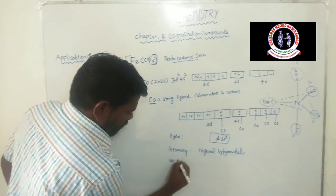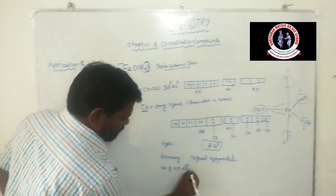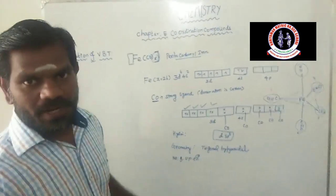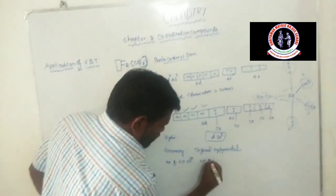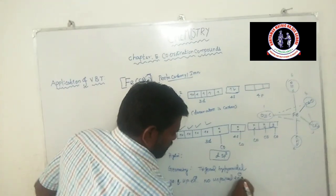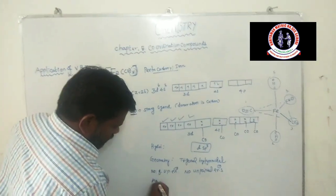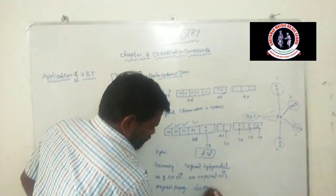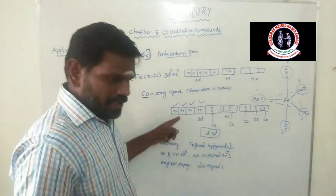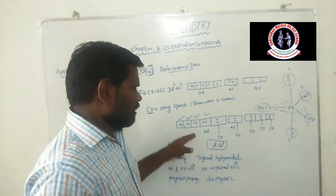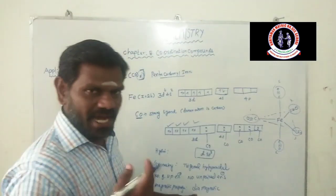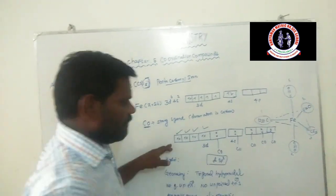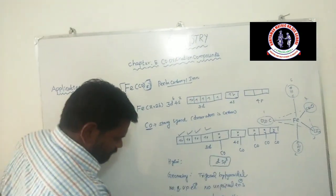The number of unpaired electrons: in the 3d shell all orbitals are doubly occupied, so there are no unpaired electrons. The magnetic property is therefore diamagnetic. Whenever the d shell has only doubly occupied orbitals it is diamagnetic; if there were unpaired electrons it would be paramagnetic. Here all electrons are paired, so it is diamagnetic.